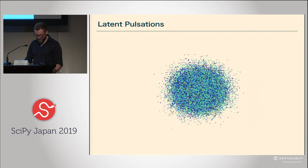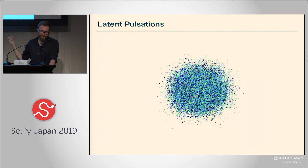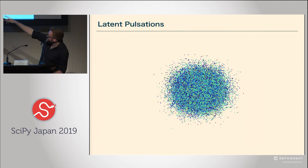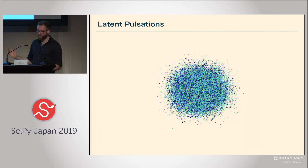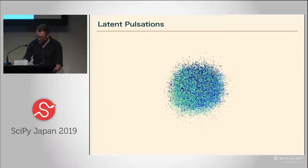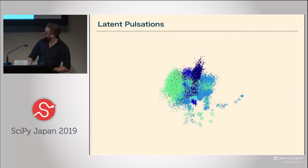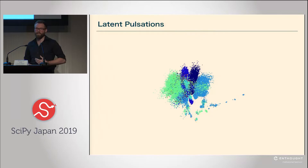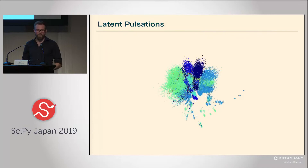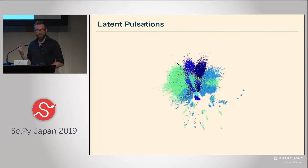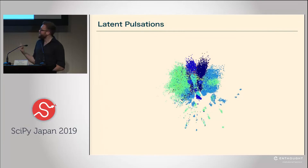I want to briefly show you some of my projects. The first I called 'Latent Pulsations' — the data here is actually text data, where each point corresponds to a financial complaint about a financial product. One color is complaints about credit cards, another is complaints about mortgages, and so on. As I play this video you see the learning process of the neural network — initially it's completely random, but clusters emerge as the network learns to understand the concepts in that text. It figures out these clusters and pulls them apart, but you also see overlapping sub-clusters because the network goes much beyond the human-defined categories. What I liked about this is the data itself is incredibly boring — financial complaints — but even with that data we could get really interesting artistic effects.